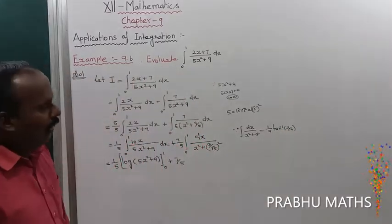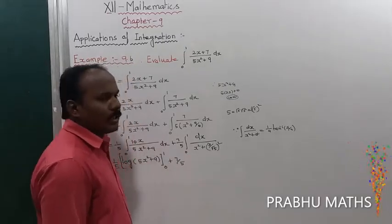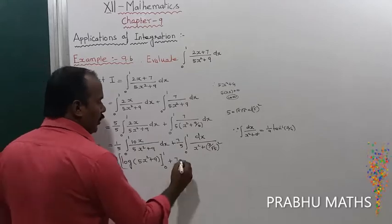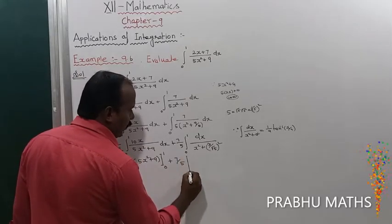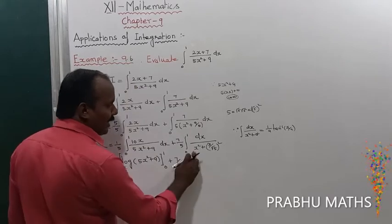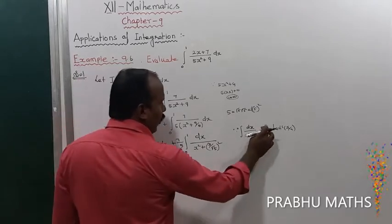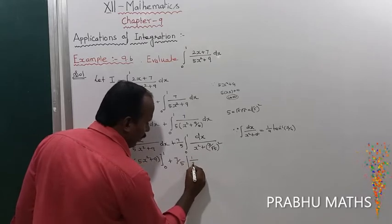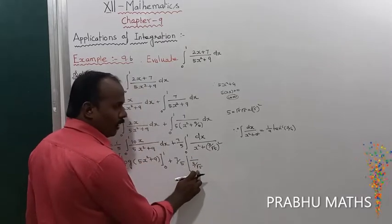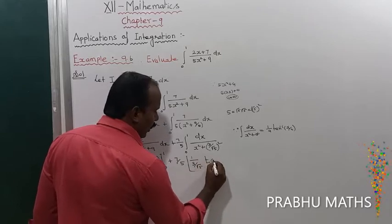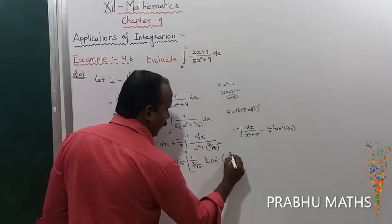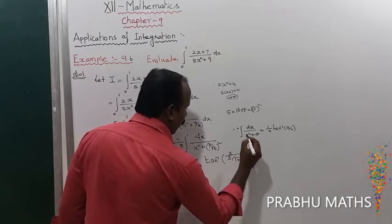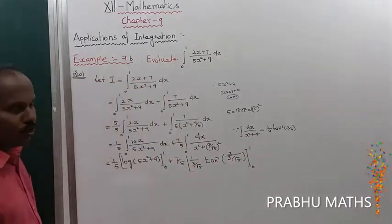Applying ∫ dx/(x² + a²) = (1/a)·tan⁻¹(x/a), with a replaced by 3/√5 and x replaced by x. So 1/a = 1/(3/√5) = √5/3. Then tan⁻¹(x/a) means tan⁻¹(x ÷ (3/√5)), with limits 0 to 1.